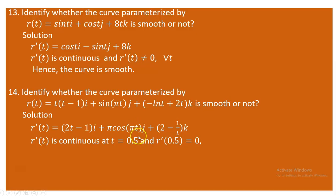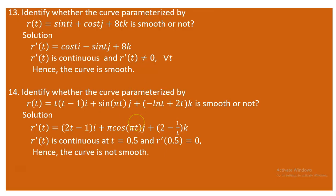Continuing with t = 0.5 in the third component: 2 − 1/(0.5) = 2 − 2 = 0. All components are zero at t = 0.5, so the derivative equals the zero vector there. Therefore this curve is not smooth at t = 0.5, and hence this is not a smooth curve.